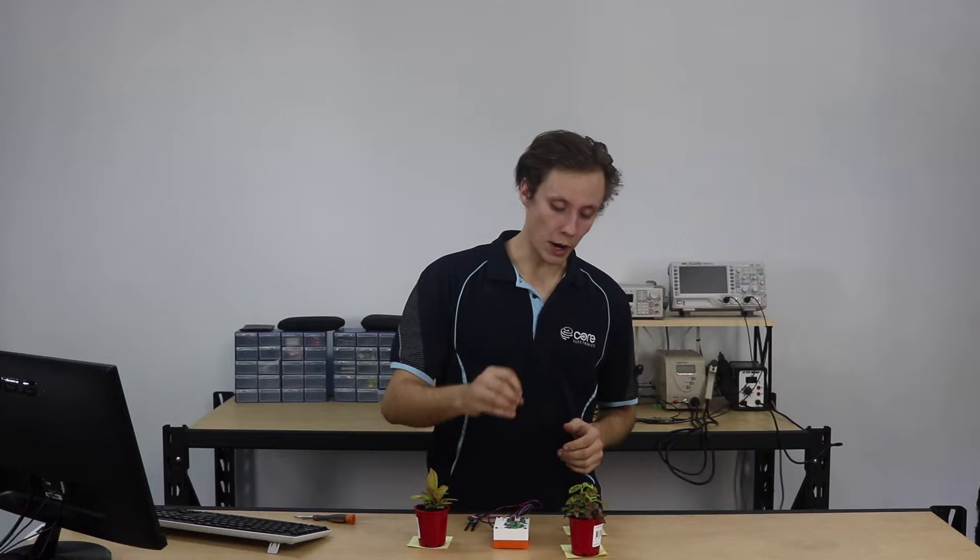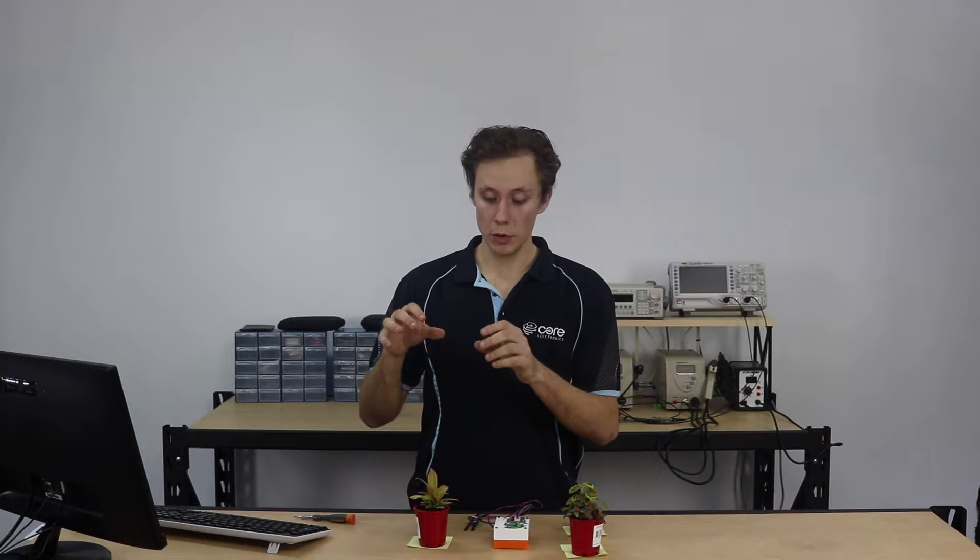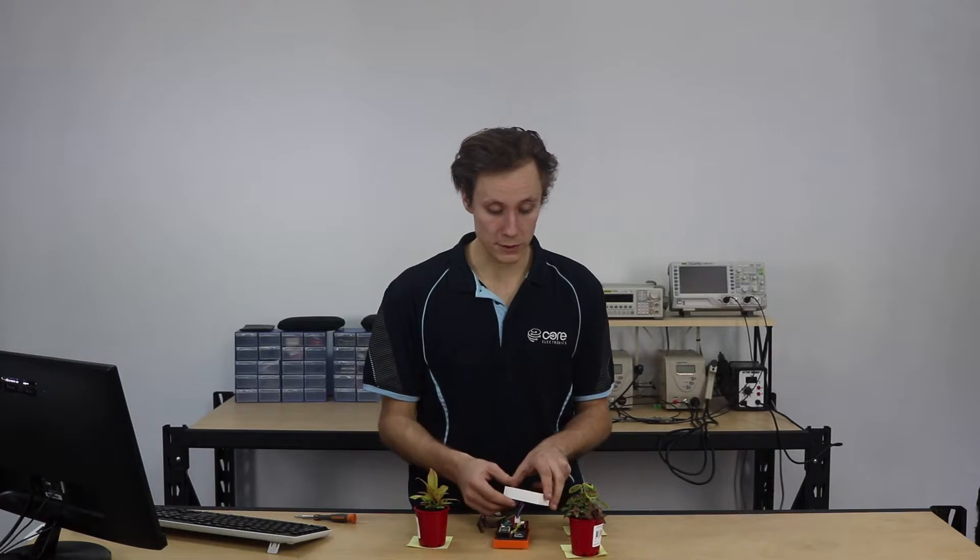So plants are cool and fun to have around the house but if you're like me you always forget to water them and then they die. It's not good. So I built a little device using a particle photon which is able to monitor the soil moisture content of the plant and then email you when it needs watering or do nothing if it's all good.